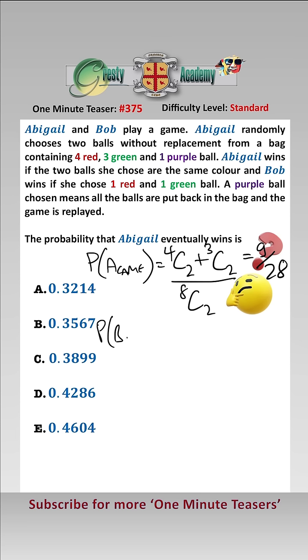The probability that Bob wins the game is equal to if Abigail picks one red, well there's 4c1 ways of doing that, and one green, there's 3c1 ways of doing that, over 8c2, which is 12 over 28.